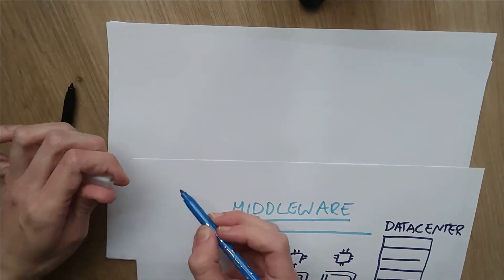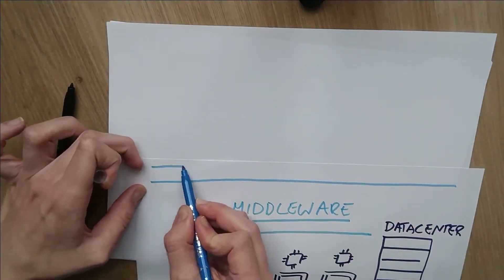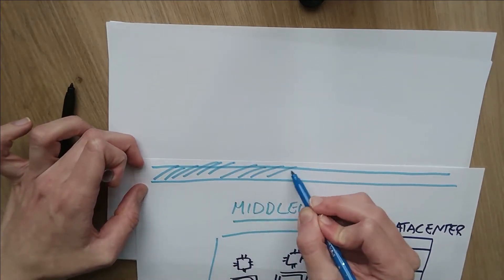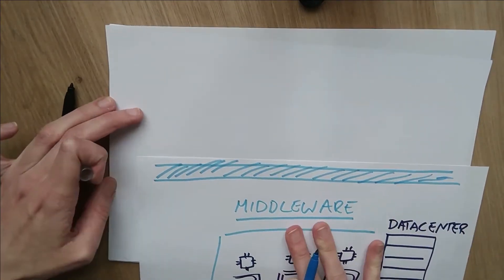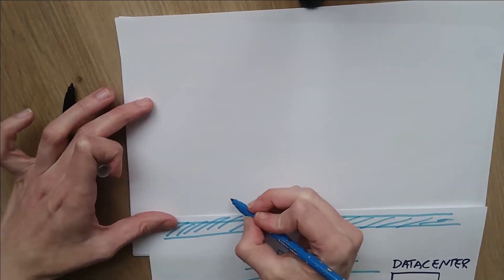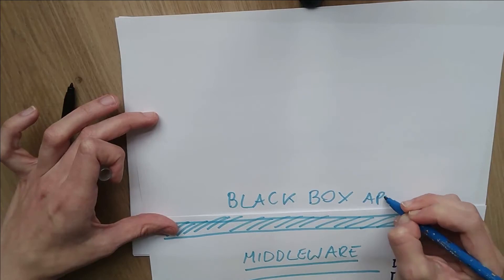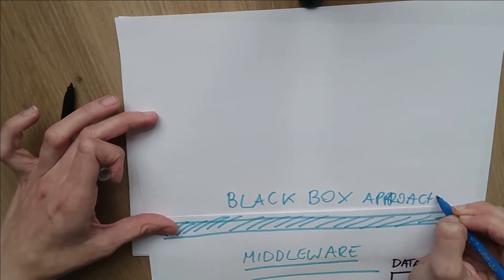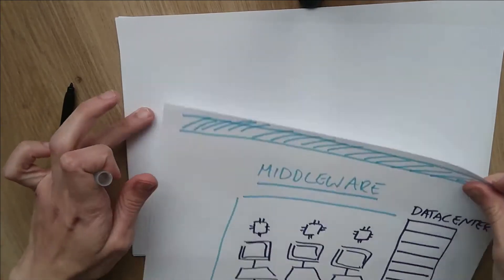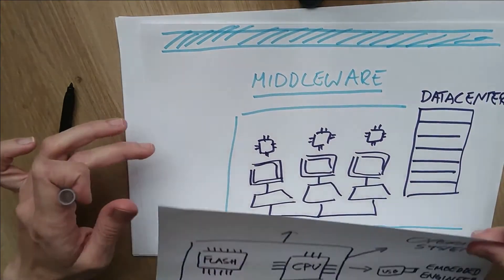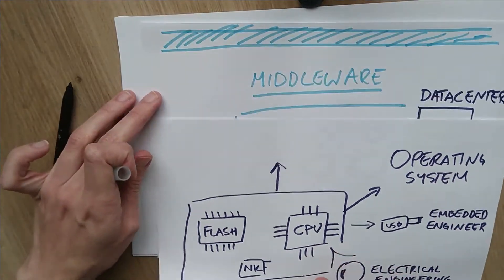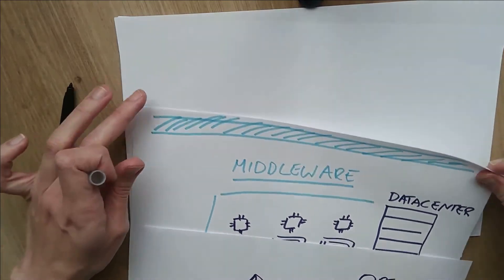However, so far we were looking at the system with a white box approach, we were knowing and we were aware of the resources that were in the system, but that might be just too much complexity for us at some point. We might just want to use the system instead of designing the ways in which we can use it because we have the resources at all the levels, be it the CPU or be it the middleware.